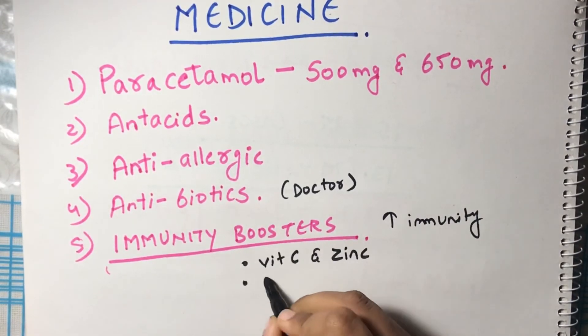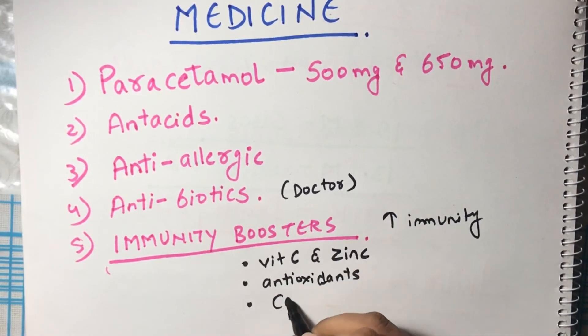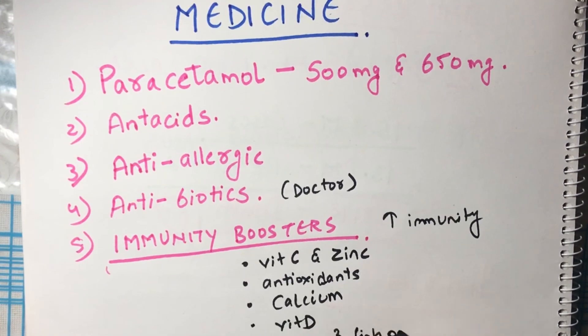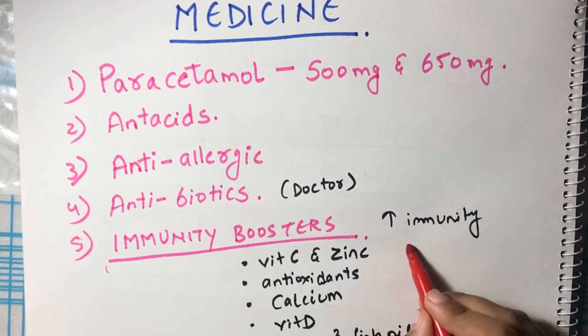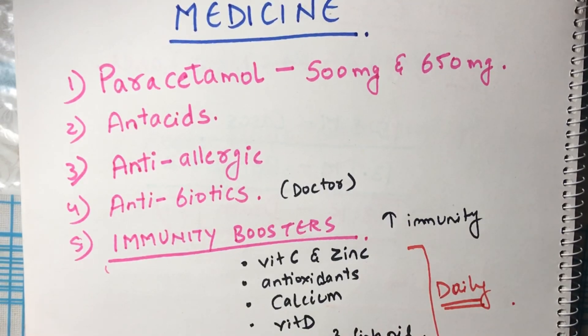These immunity boosters we have are: vitamin C and zinc tablets, antioxidants, and along with the antioxidants we have calcium with vitamin D, and the last one is omega-3 fish oil capsules. Considering the current situation, it's my recommendation to keep these things in your home already for precaution and for treatment as well. These things are very important, which I mentioned above.